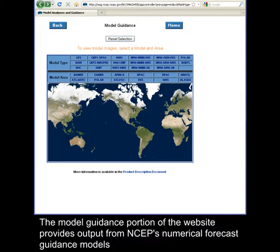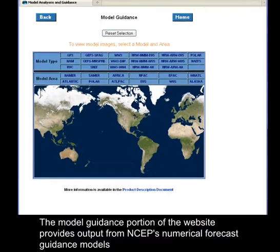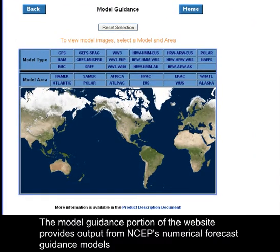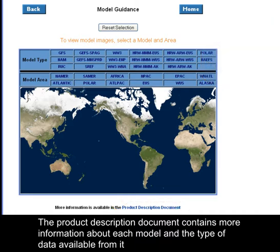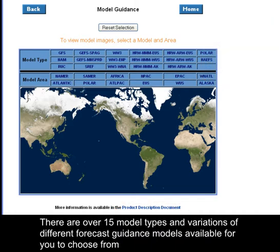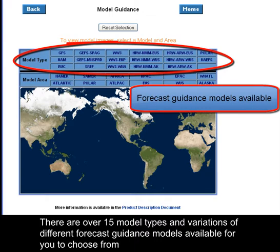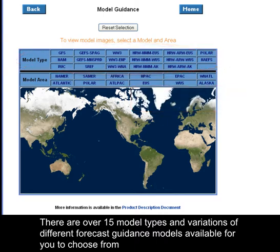The Model Guidance portion of the website provides output from NSEP's Numerical Forecast Guidance Models. The product description document contains more information about each model and the type of data available from it. There are over 15 model types and variations of different Forecast Guidance Models available for you to choose from.